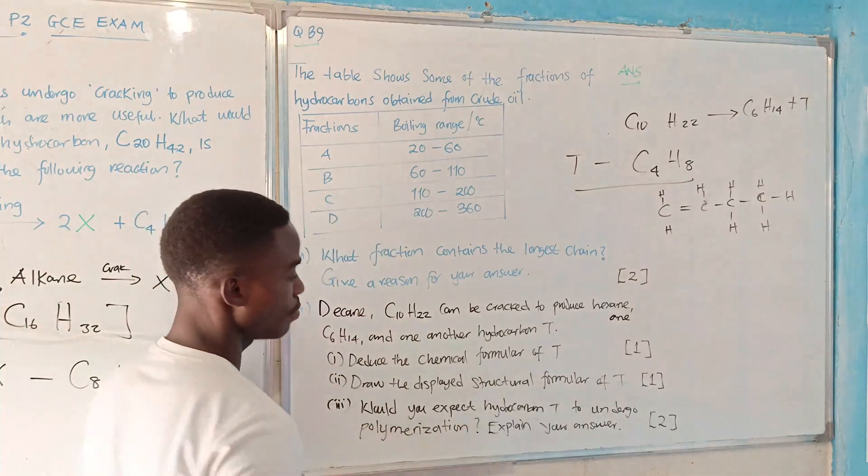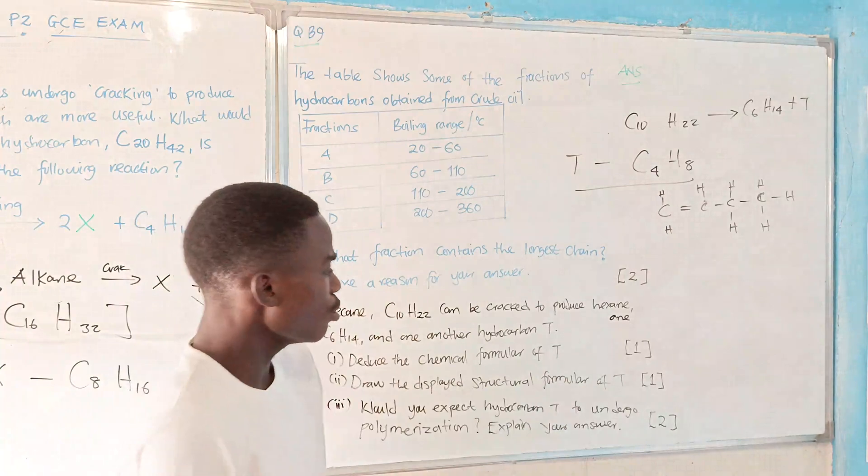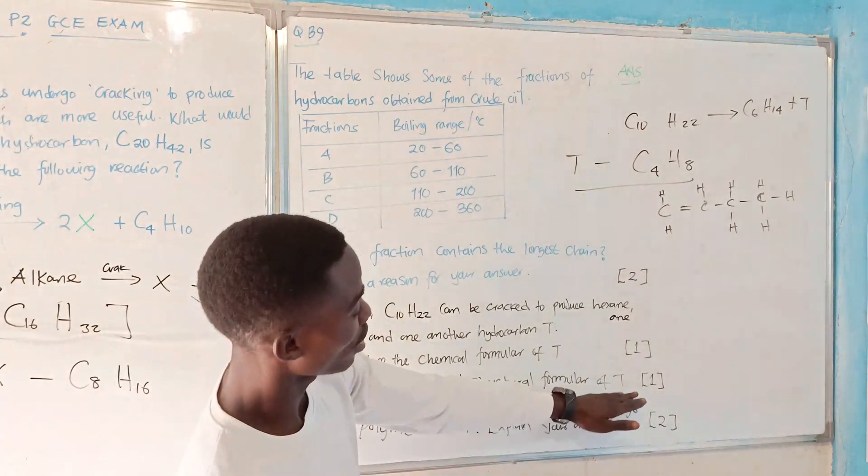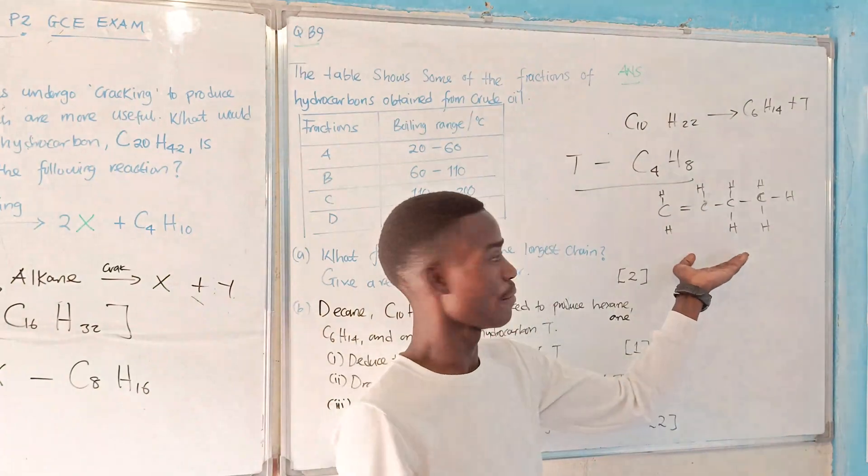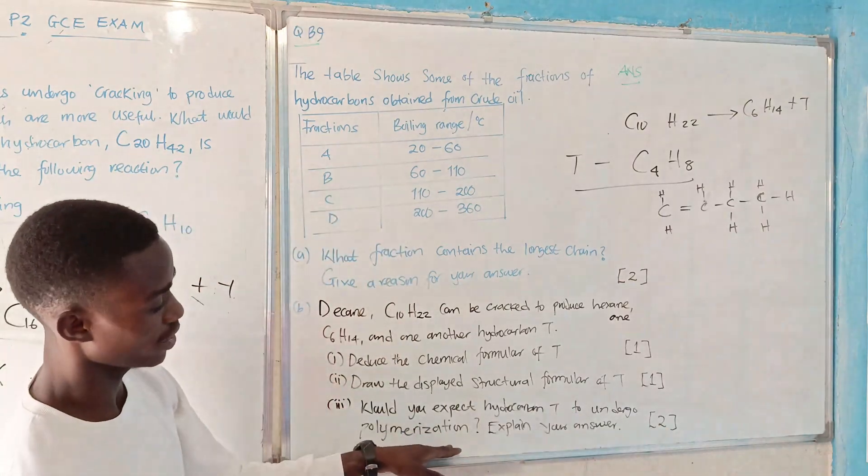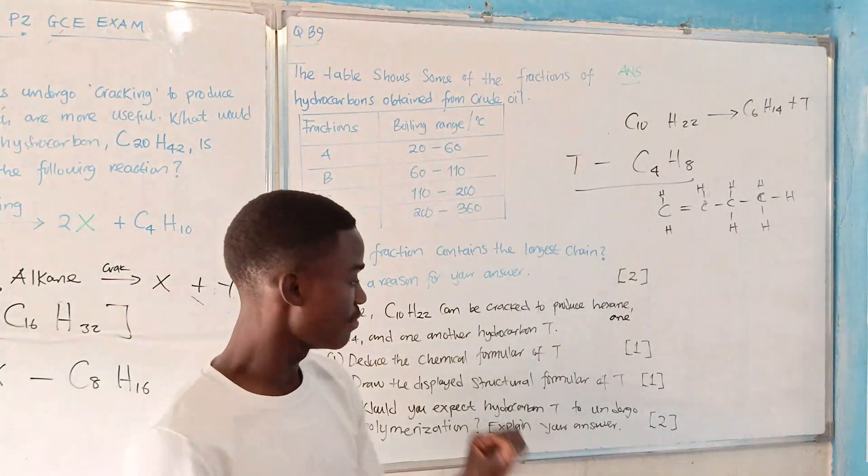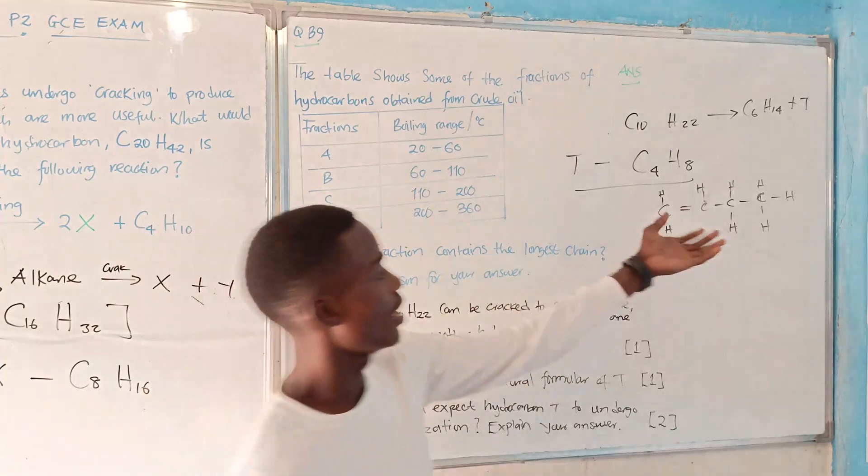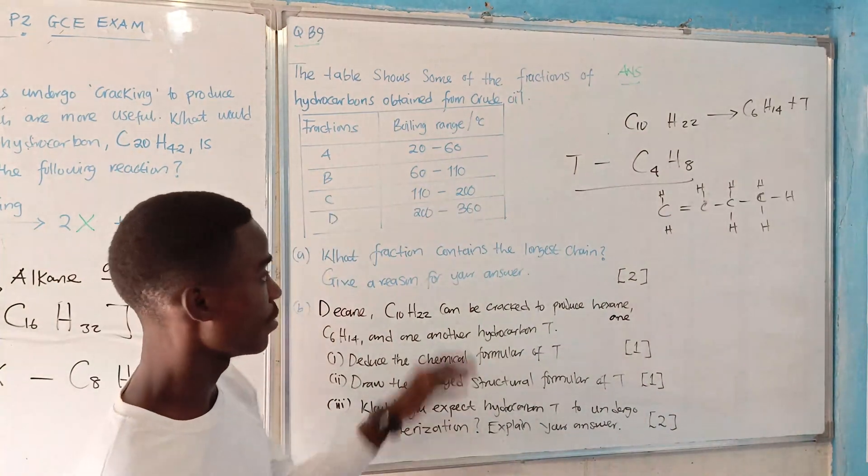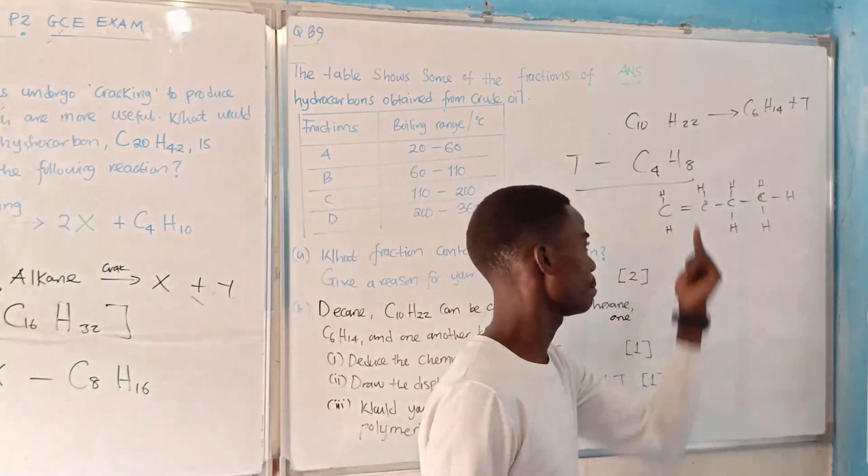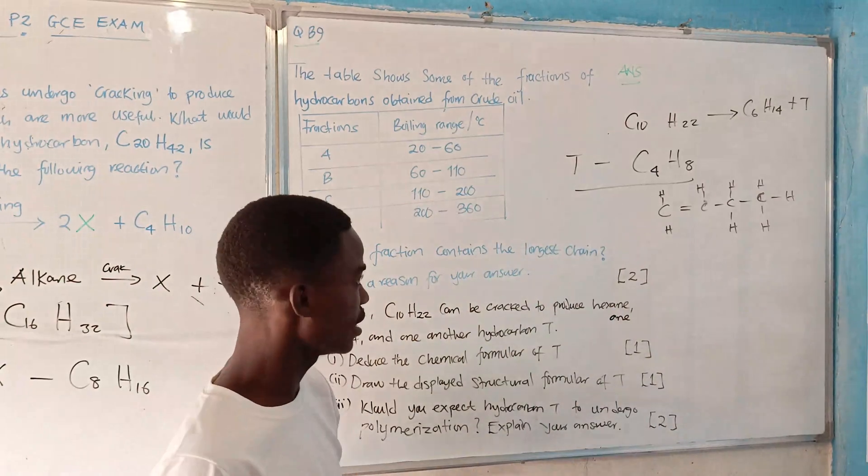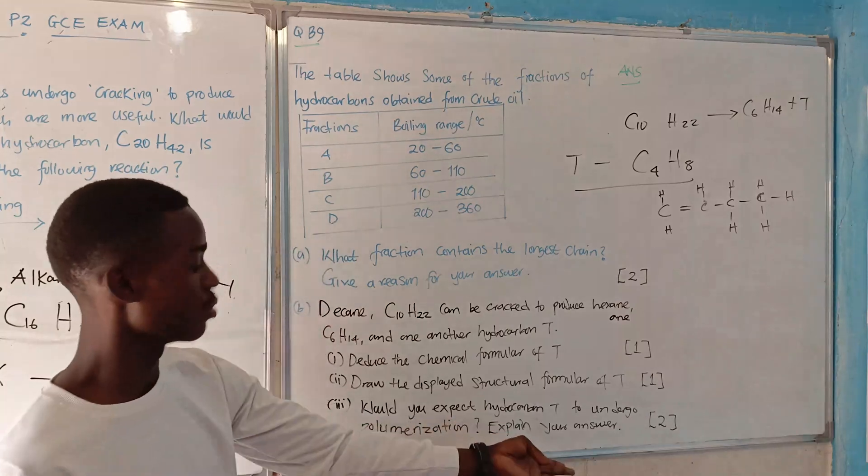Should you be asked to name this hydrocarbon T, this is butene. Would you expect hydrocarbon T to undergo polymerization? Explain your answer. Yes, indeed it can undergo polymerization because of the presence of the double bond there. And also, it is an unsaturated hydrocarbon.